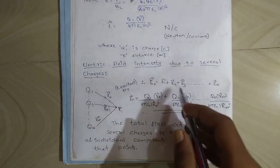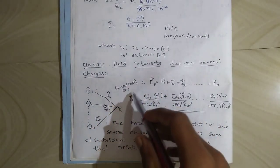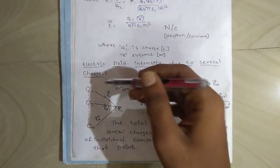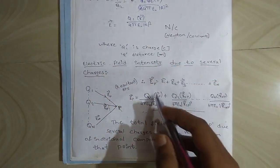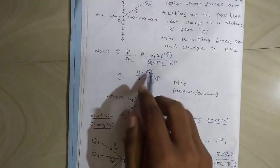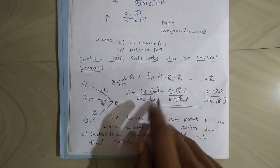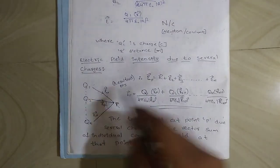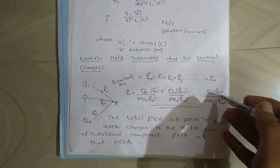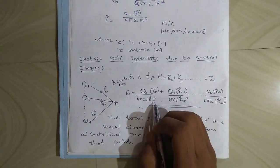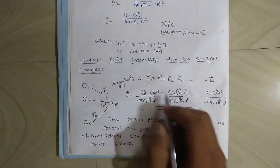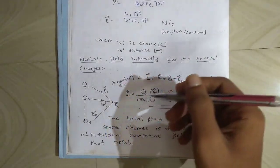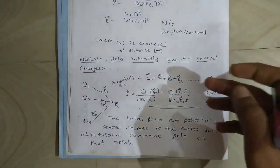The resultant EFI is found by adding all individual contributions. E1 is the EFI due to q1, and we apply the formula for each charge similarly. EFI due to q2 follows the same process, and so on. r1P is the distance, and we know how to find the unit vector, which we will see in the problems from BEC 401.